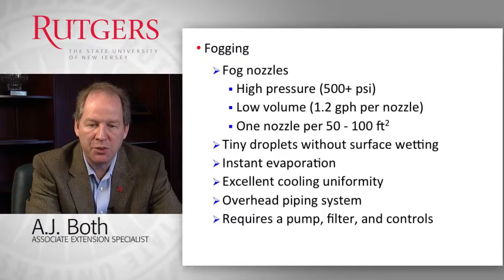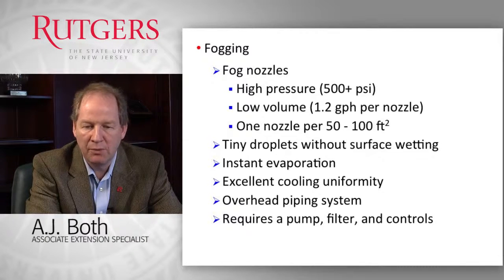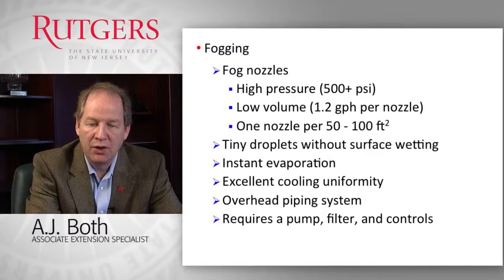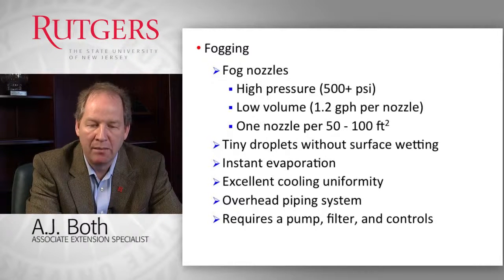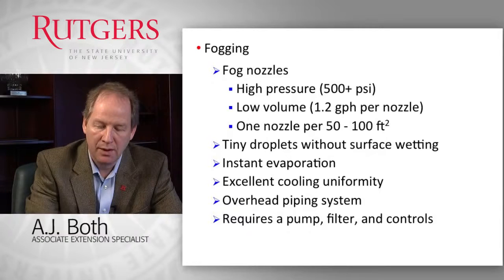We use high pressures — 500 plus psi — with perhaps as little as 1.2 gallons per hour per nozzle of water flow, and one nozzle for every 50 to 100 square feet of growing area. This provides excellent cooling uniformity since we place those nozzles throughout the greenhouse environment, making it more uniform than a pad and fan system. We need an overhead plumbing system, a high-pressure pump, very clean water with critical filters due to the small opening sizes, and controls to operate the fogging system.